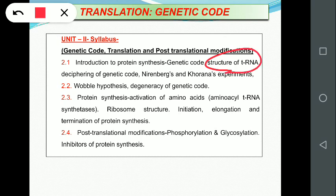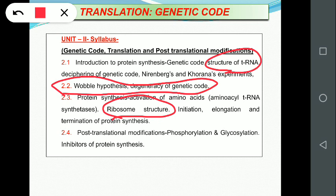In this video lesson, we are going to study the structure of tRNA, the wobble hypothesis and degeneracy of genetic code, and ribosome structure. These three are very essential for understanding the translation process. Using the genetic code, we can elucidate the amino acid sequence from the nucleotide sequence of mRNA.